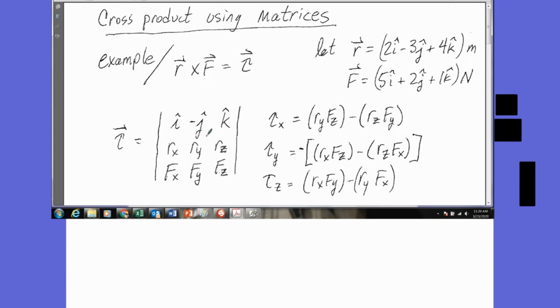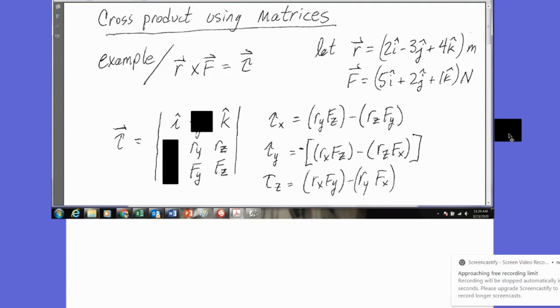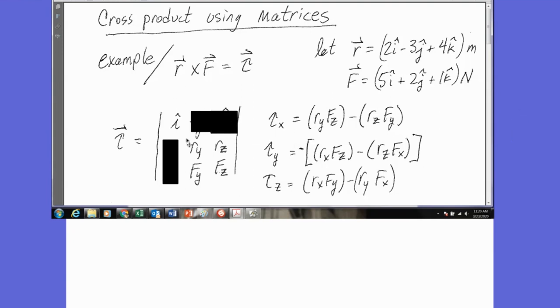So the reason why we set it up like this is first to find the I term of the cross product, we're going to cover up the I column and we're going to cover up the top row except for I. And now we're just going to do a little X like the shape of an X this way. So I say RY times FZ minus RZ times FY. And that's what you see here. So that will be my X component of the torque vector.